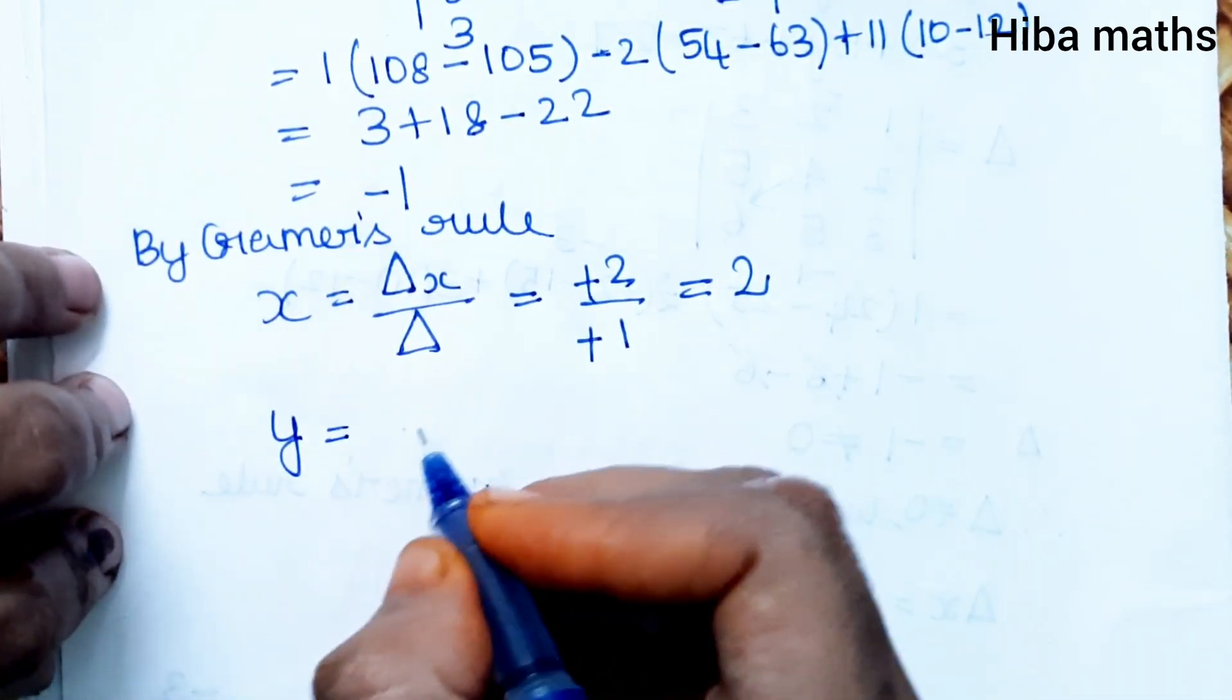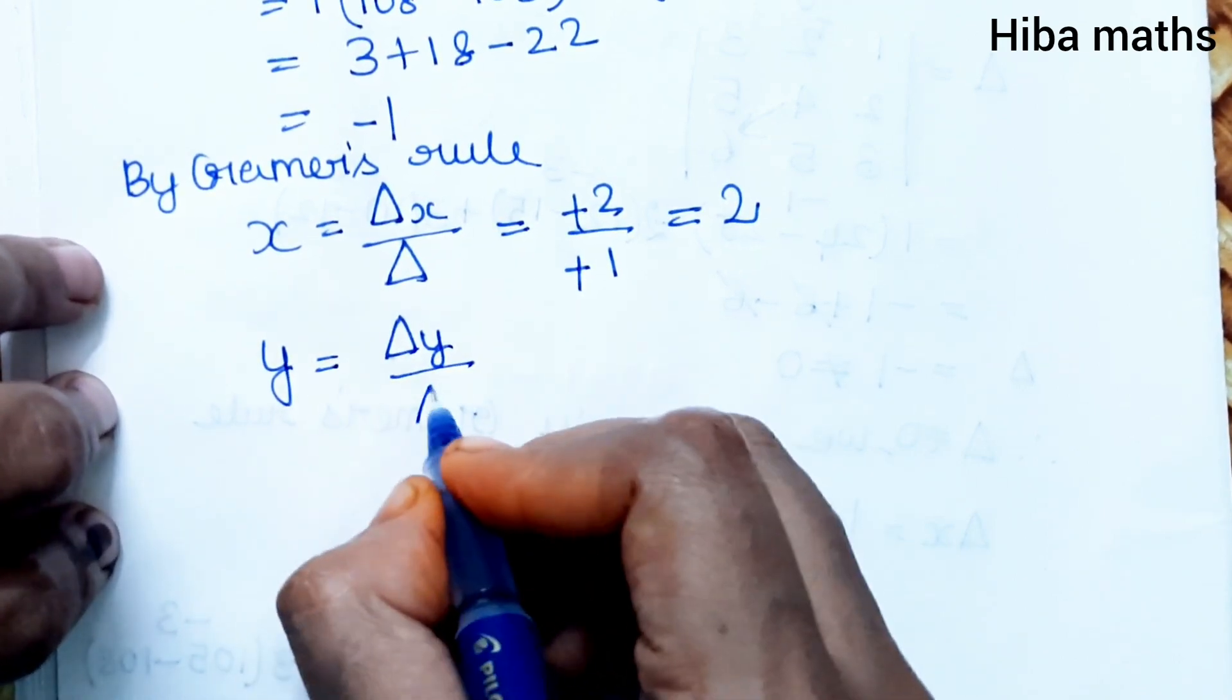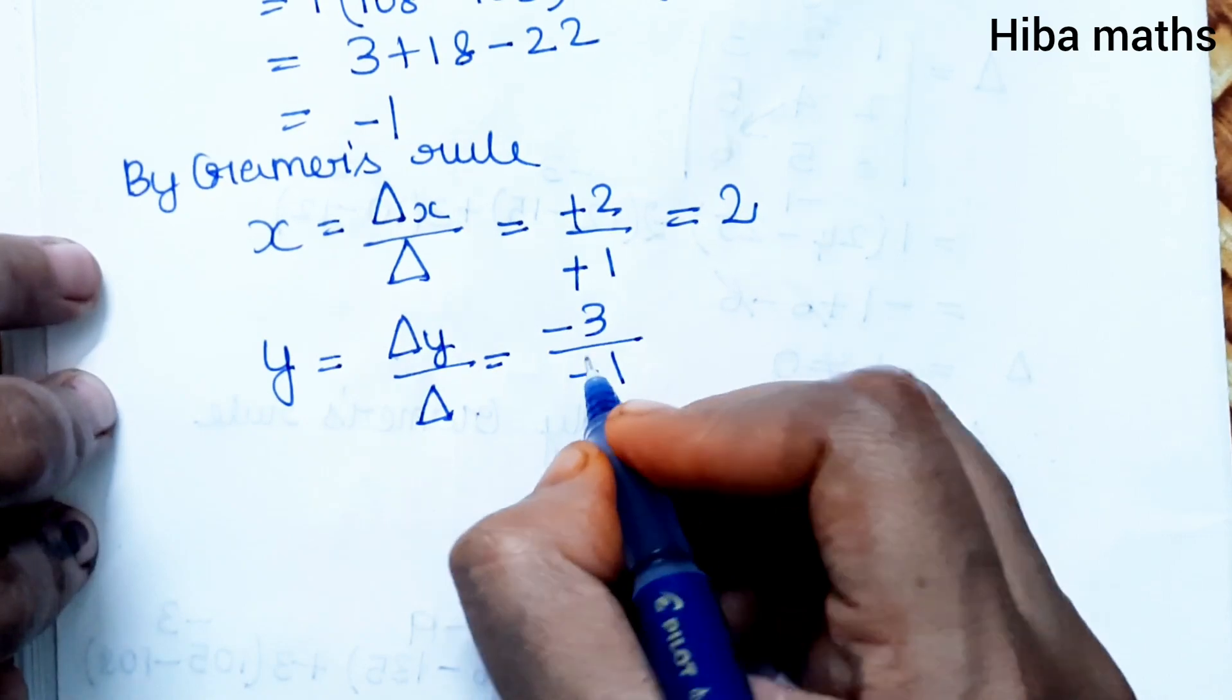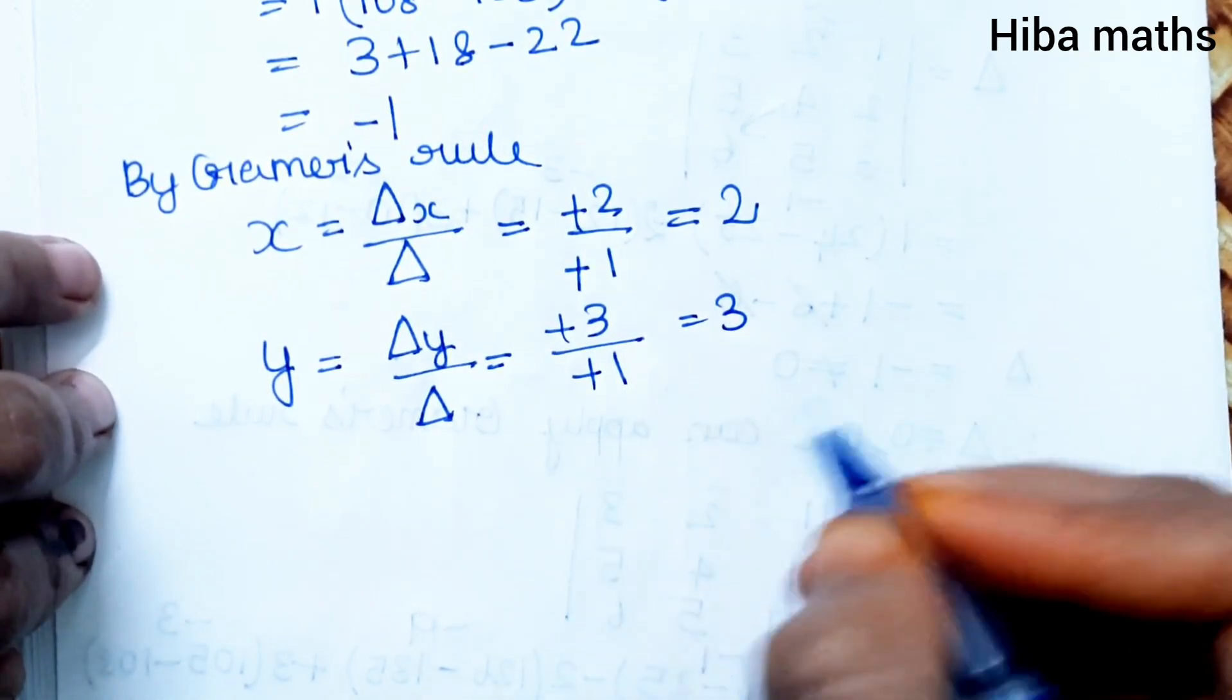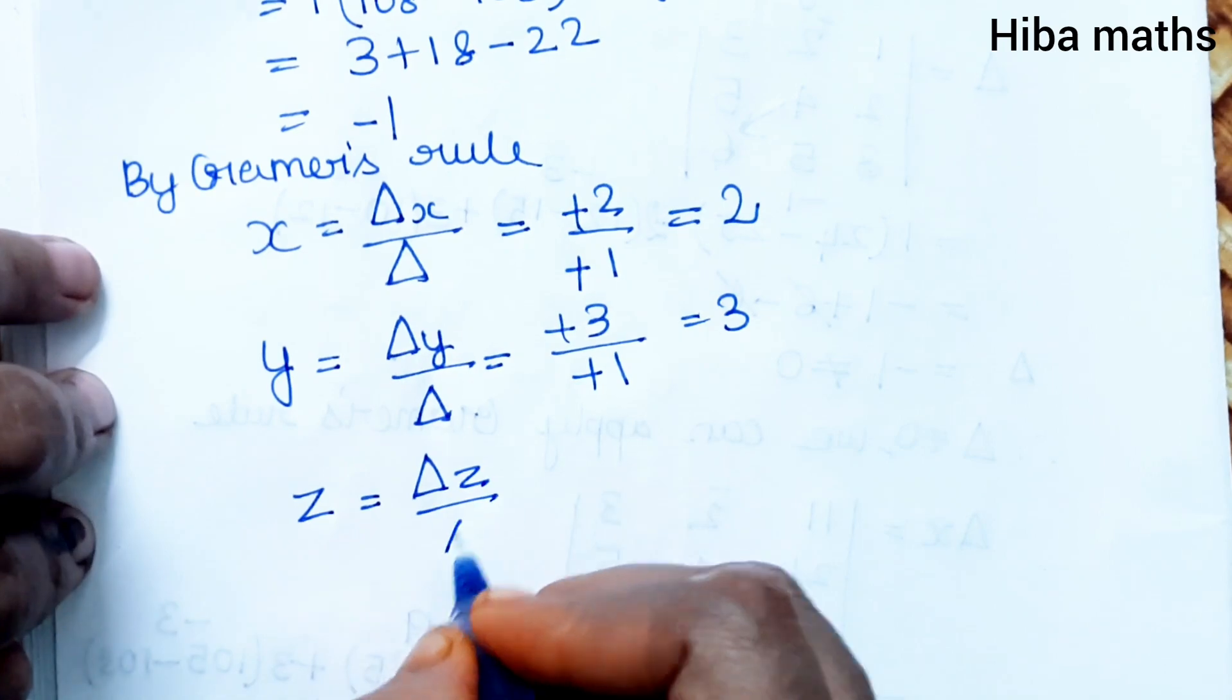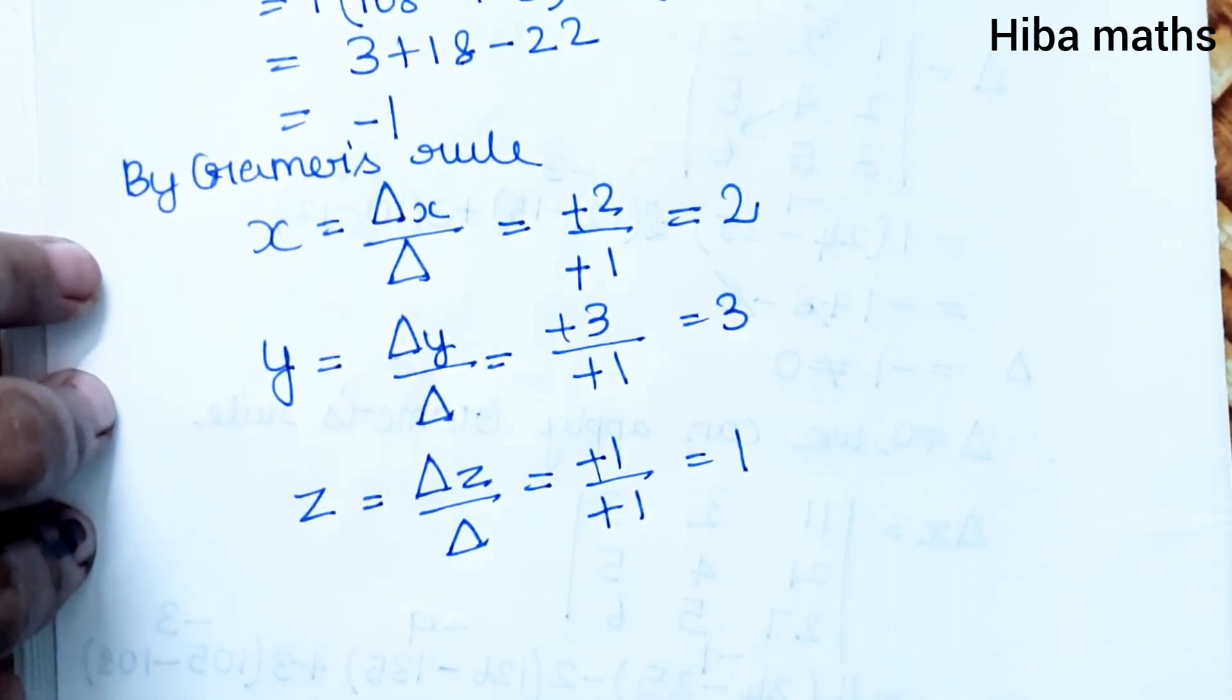Therefore, X = del X / del = -2 / -1 = 2. Y = del Y / del = -3 / -1 = 3. Z = del Z / del = -1 / -1 = 1.